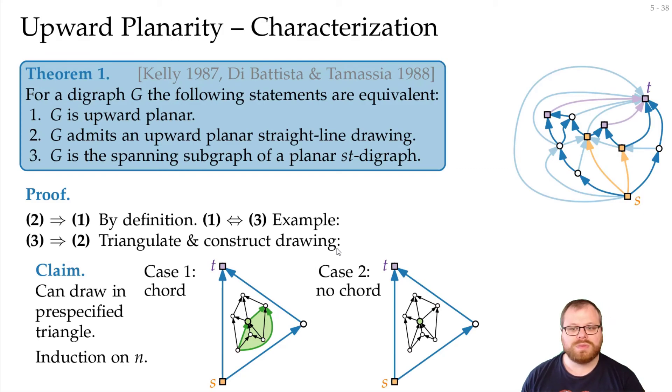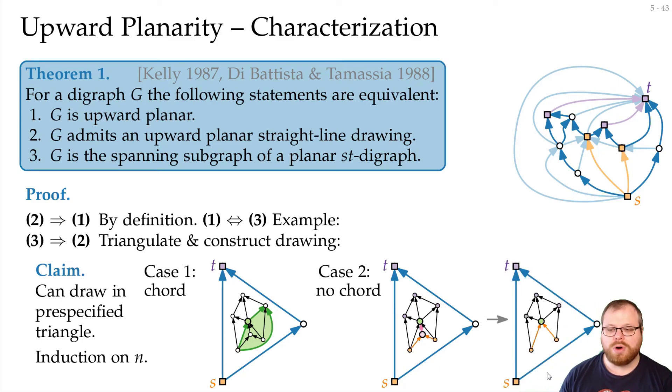What about the other case, if we have no chord? Then, we look at the neighbors with an incoming edge to our vertex. From these neighbors, there must be a highest one, so one that doesn't have an outgoing edge to any other of these orange vertices. And we pick that one here. Now, we want to do a contraction. And this contraction is safe, because we don't have a chord. So, we contract this edge here, and we get a smaller graph.